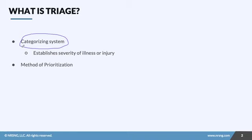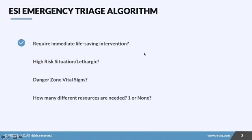Triage establishes the severity of an illness or injury, and it's really used in emergency or disaster situations to determine which patients have injury or illness, what degree of injury or illness they have, and how we should then treat that. It's really a method of prioritization for these types of situations.